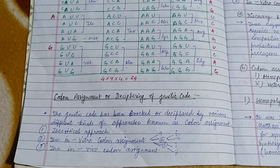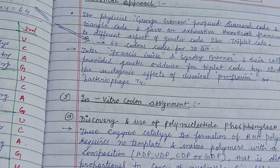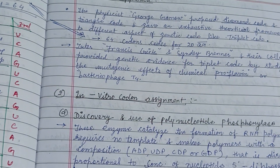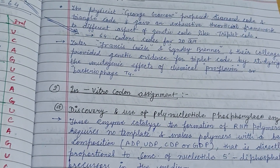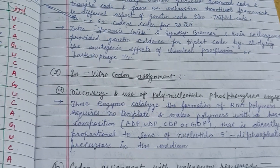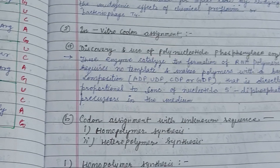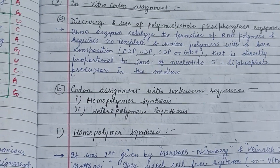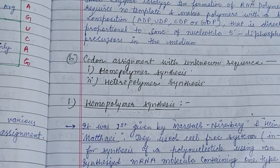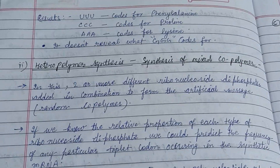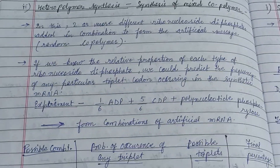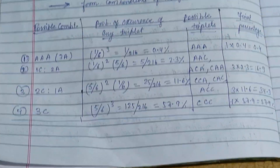Codon assignment and deciphering of the genetic code. The theoretical approach: physicist George Gamow proposed the diamond code and the triplet code, giving an exhaustive theoretical framework to different aspects of the genetic code like triplet codons. The discovery and use of the polynucleotide phosphorylase enzyme enabled codon assignment through homopolymer synthesis and heteropolymer synthesis.